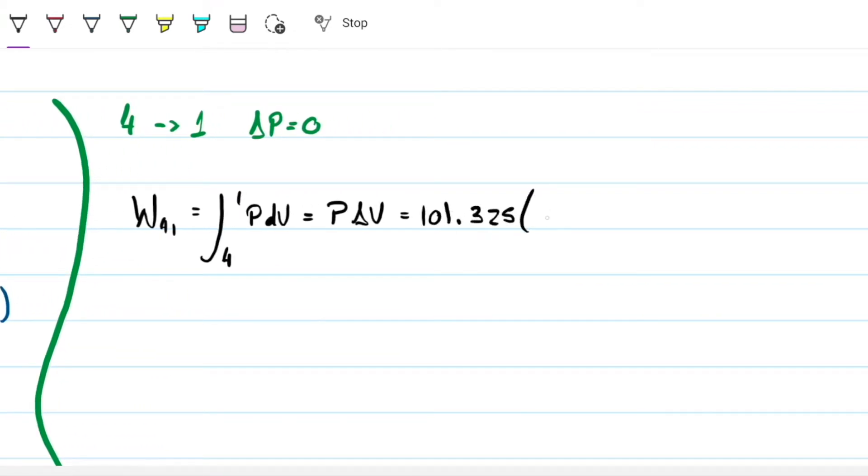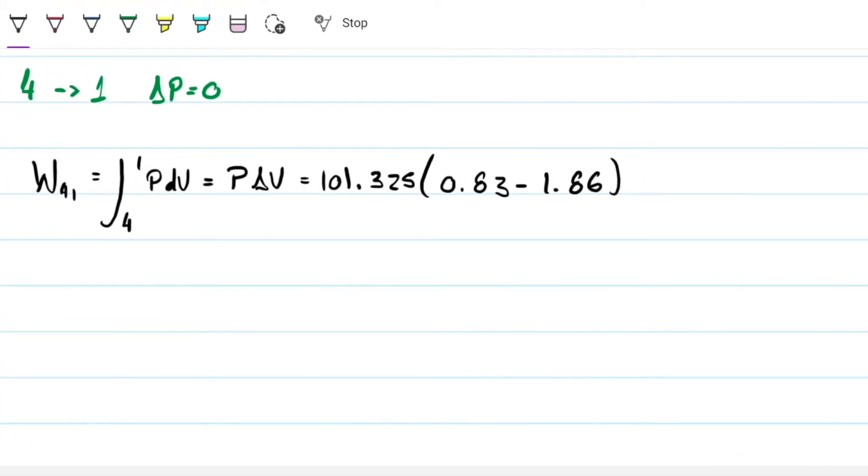So that means that we have 101.325, we had this value from the start, and then delta V is 0.83 minus 1.86. So once again, we're going to get a negative value, and that means, again, we knew that from the start because it's compression, but we'll just double check with this sign. Let's just check the units. So we have kilopascals on the pressure, and then we have meters cubed per kilograms, and this is a joule, so this is the same thing as kilojoules per kilogram. We're good to go. This turns out to be negative 104.36.